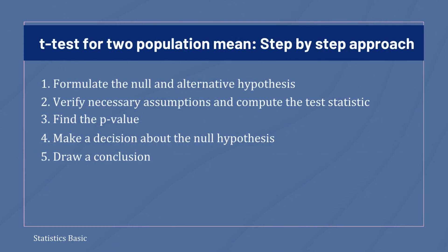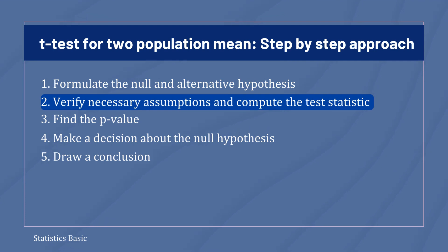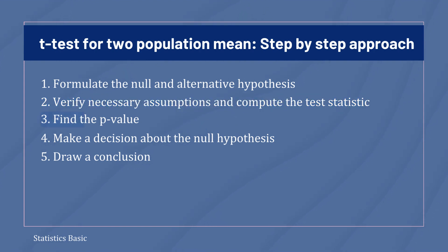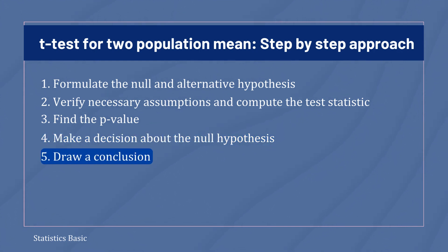In the next few slides, we will follow a five-step hypothesis testing procedure. We'll begin by formulating null and alternative hypotheses. Then we'll verify that the data meets certain statistical assumptions, and once assumptions are confirmed, we'll compute the test statistic. In the third step, we will find the p-value using the t-distribution table. Then we'll make a decision about the null hypothesis based on the p-value, and in the final step, we'll interpret the results and draw conclusions.